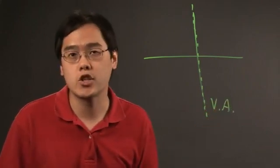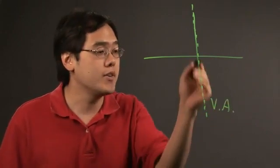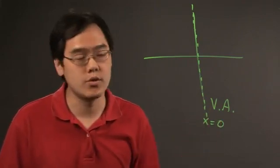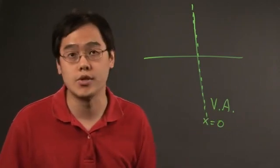Now this happens at rational functions all the time, but specifically the y-axis is also the vertical line x equals 0. So the vertical asymptote would occur at x equals 0.